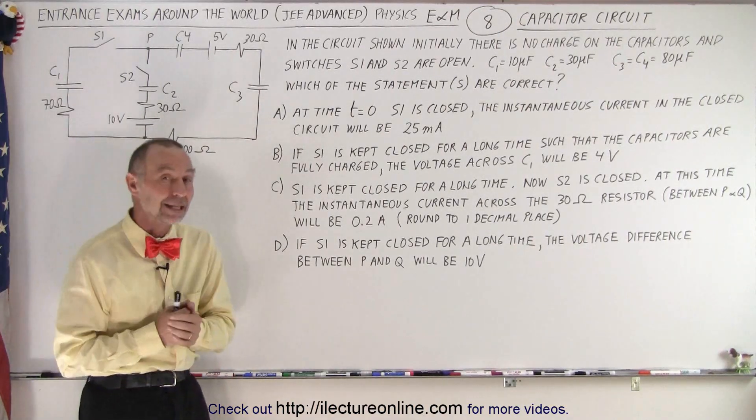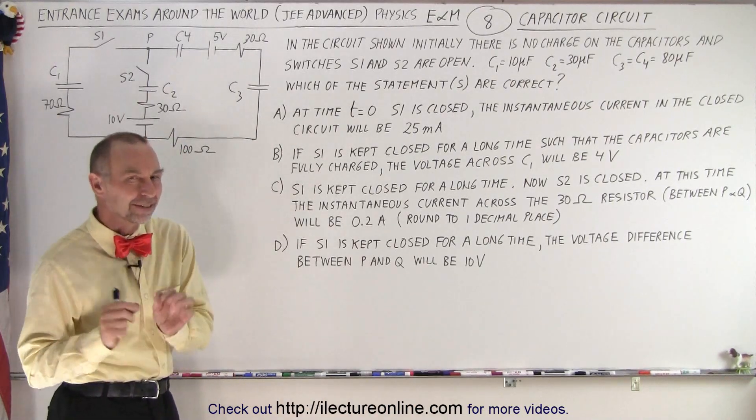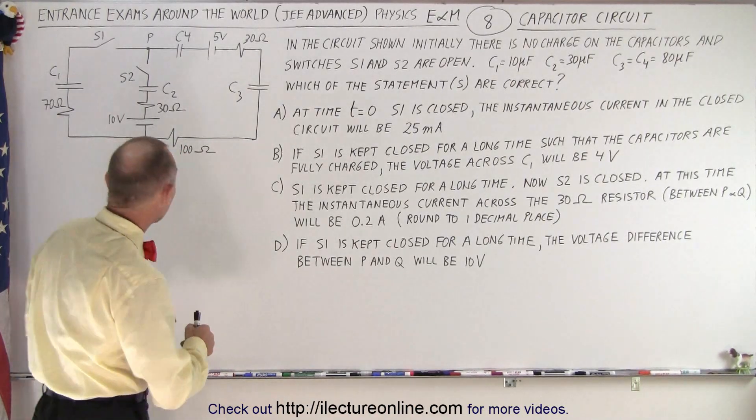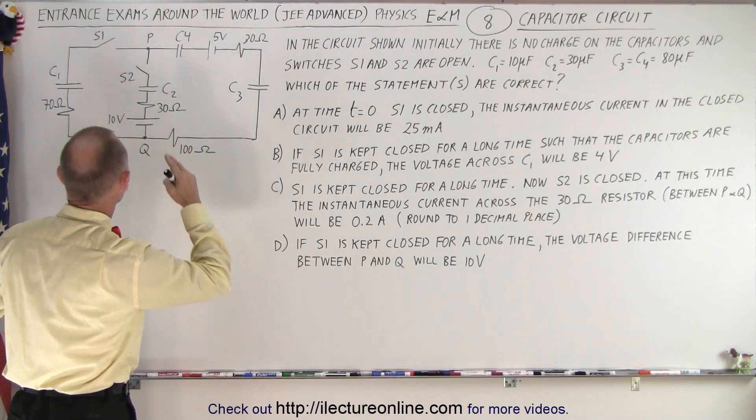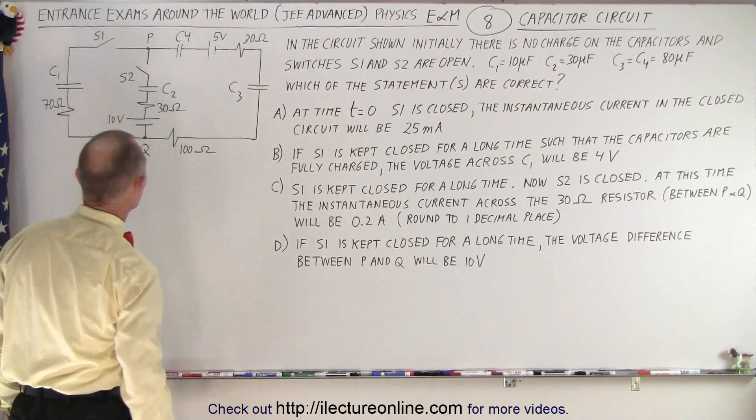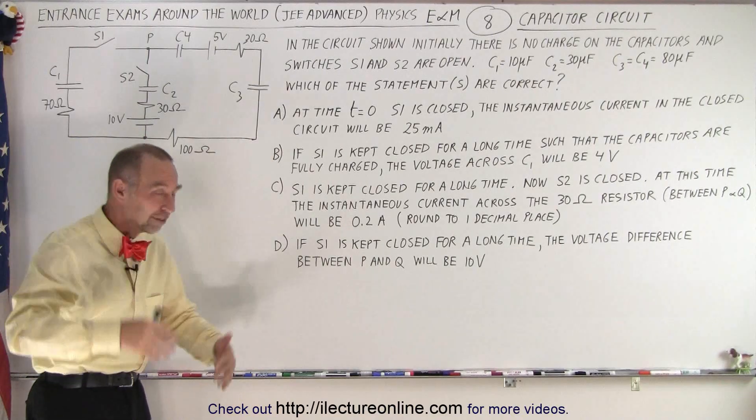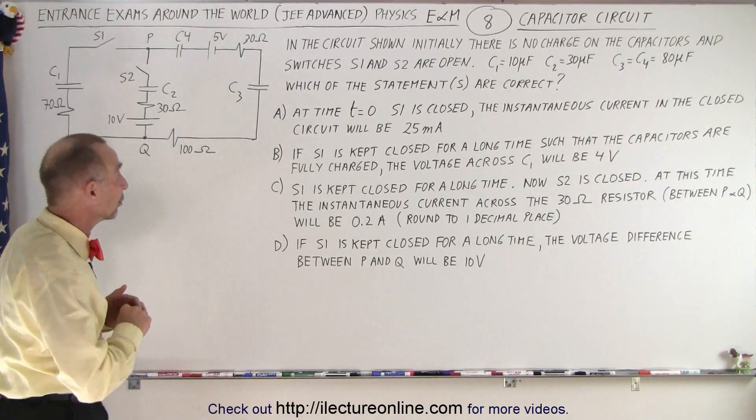It deals with electricity magnetism, but more specifically with capacitor circuits. It's not a simple circuit. It has two switches, four capacitors, two batteries, and four resistors, and the switches are closed at different times. Let's read the problem and see what we're going to do with it.